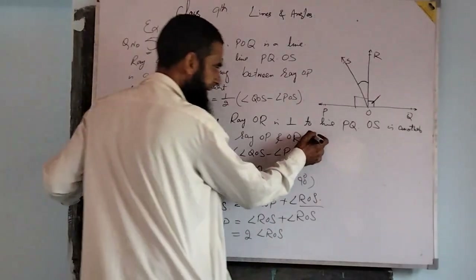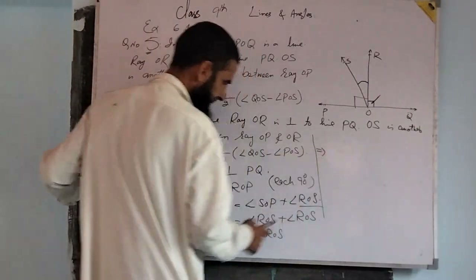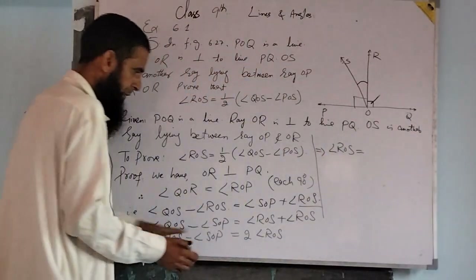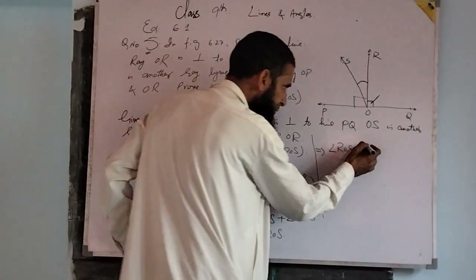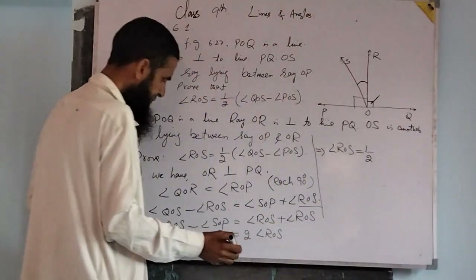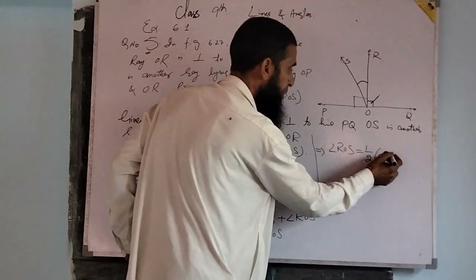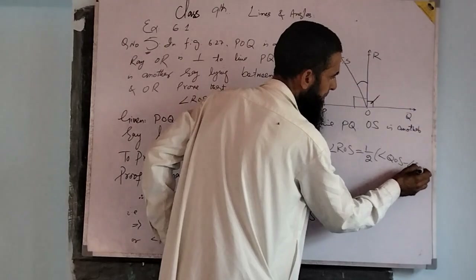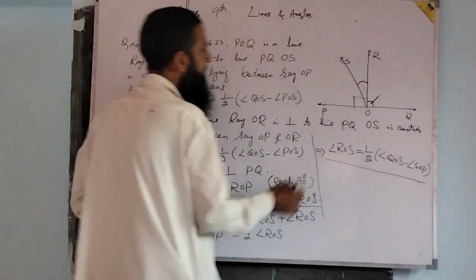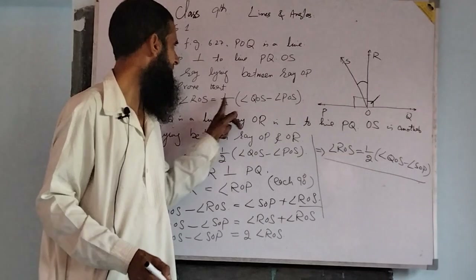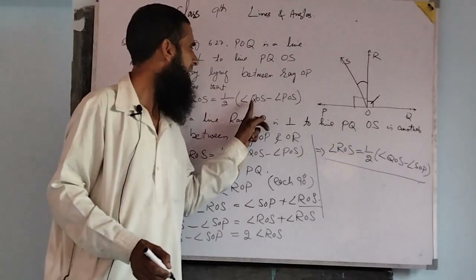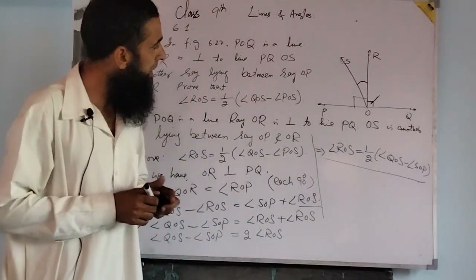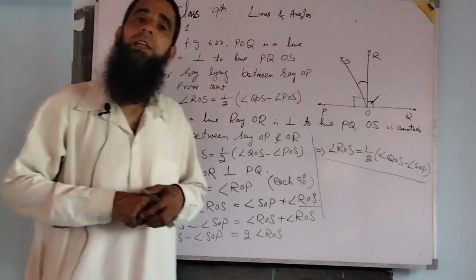Toh divided hoga yahan par. This implies angle R-O-S is equal to ½ (angle Q-O-S minus angle S-O-P). We have proved: angle R-O-S = ½ (angle Q-O-S − angle P-O-S). Dear students, this question is complete.